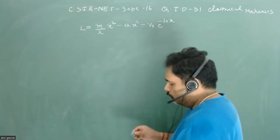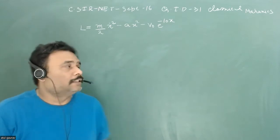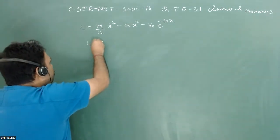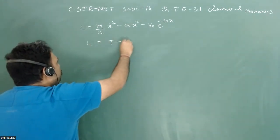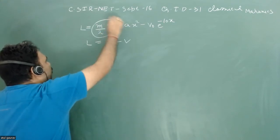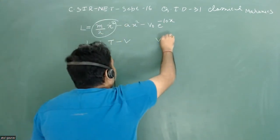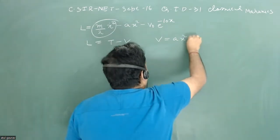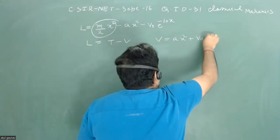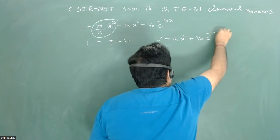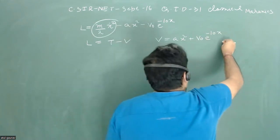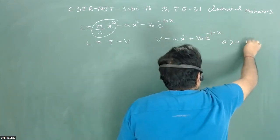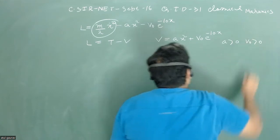So we all know that Lagrangian of a system is L is equal to T minus V. So this is my kinetic energy. My potential energy is A x square plus V naught e to the power minus 10x. And in this problem, it is given A is greater than zero, as well as V naught is greater than zero.